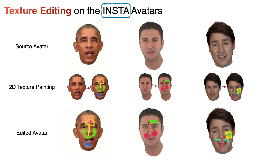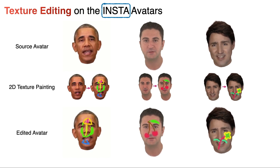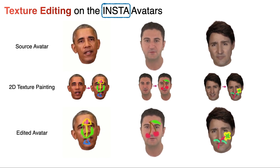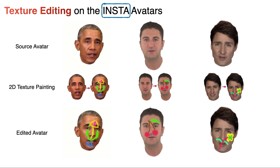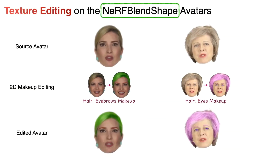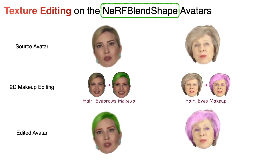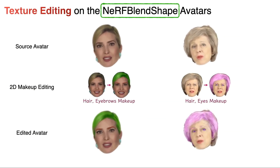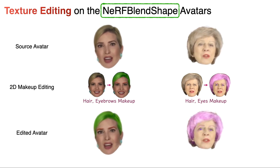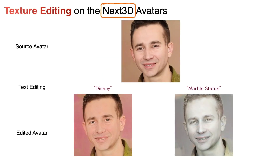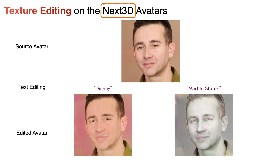We show examples of pattern painting. As you can see, we can paint a complicated pattern on the whole face. We show the intricate texture editing on the NeRF Blend Shape Avatars — we put makeup on the eyes, eyebrows, and hair. We also perform text-driven editing on the Next3D avatars.